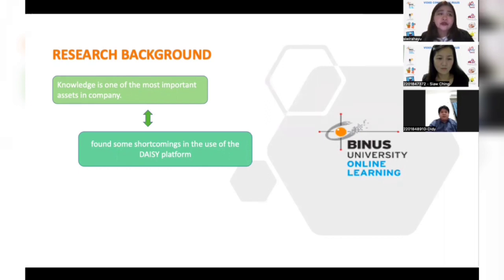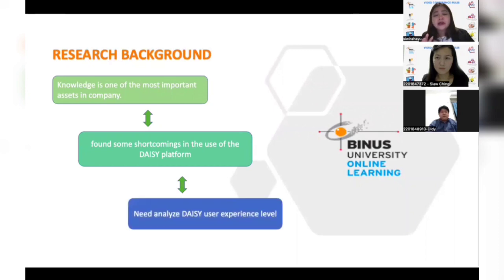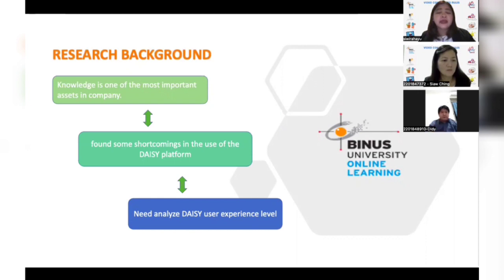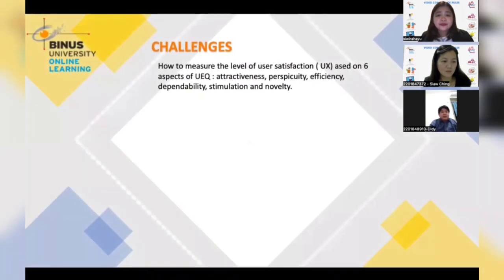From the research, we found some interesting findings that brought us to the conclusion that we need to analyze this platform's user satisfaction level. The next slide about the methodology will be explained by my friend, Didi. Hello, I'm Didi. I'm explaining about our research challenge and methodology. The challenge is to measure the level of user satisfaction by measuring both classical usability aspects — that is efficiency, flexibility, and dependability.